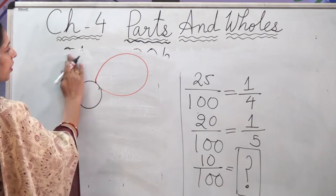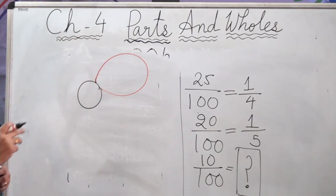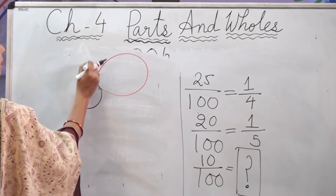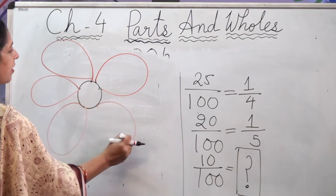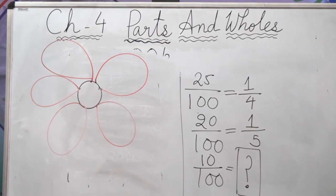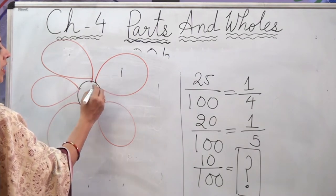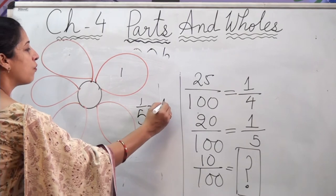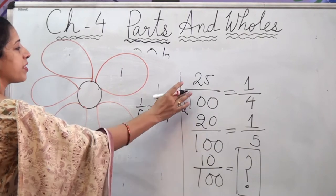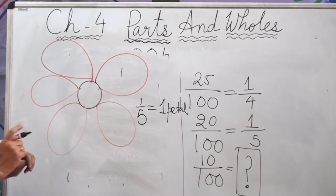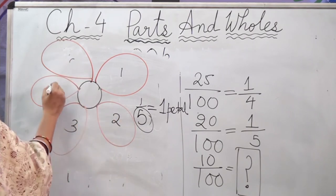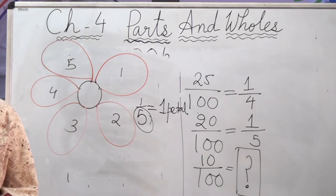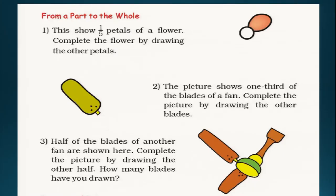1/5 of the flower is given. You have to find out how the total flower will look. Since 1 part is shown, 5 parts in total means 5 petals altogether — 1, 2, 3, 4, 5. So if 1/5 equals 1 petal, the total number of petals is 5. Similarly, picture 2 shows 1/3 of a fan blade is drawn. Complete the picture by drawing the other blades.